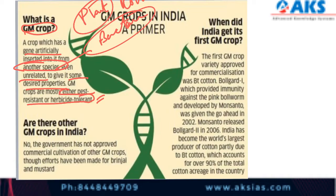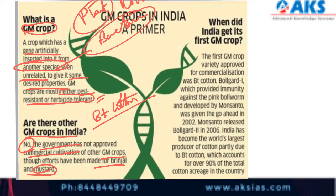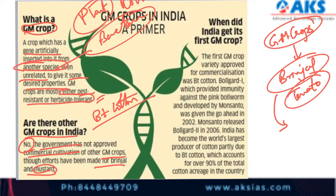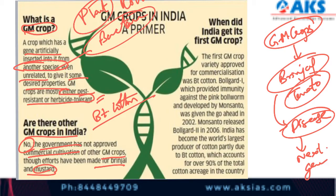Are there other GM crops in India? No. Apart from Bt cotton, many trials were attempted but not allowed. The government has not approved commercial cultivation of other GM crops, though efforts have been made for brinjal and mustard. The problem is that we do not know the repercussions. Cotton is not edible, so the risk is smaller, but for edible crops like brinjal or tomato, consumption may lead to diseases or effects that could be passed on to the next generation.